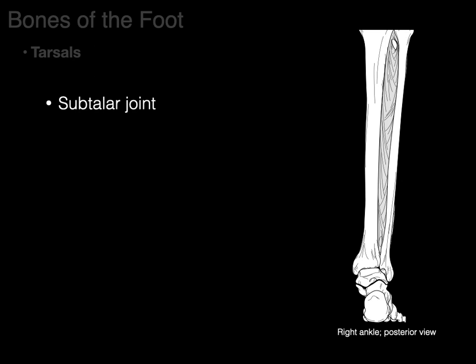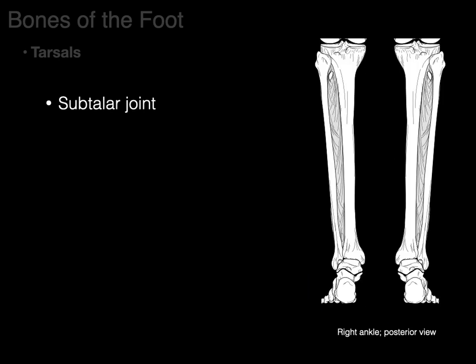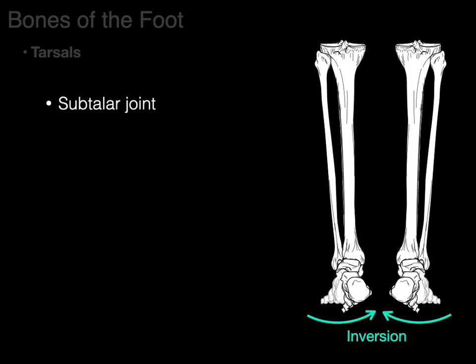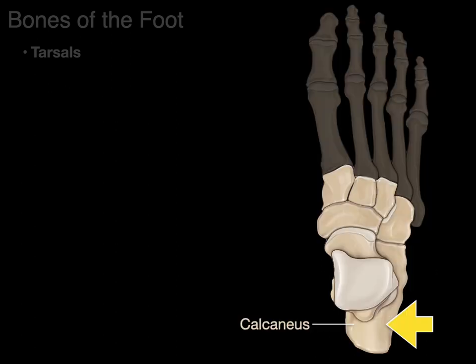Let's now talk about the subtalar joint. In green is the talus and in orange is the calcaneus, and in between is a joint — that's why it's also appropriately called the talocalcaneal joint. This joint is important because it's what allows for inversion and eversion movements of the ankle.